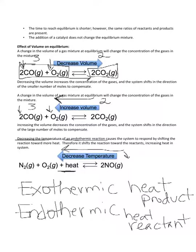What if you had an exothermic reaction? In that case, the heat would be on the right-hand side. So if you decrease the temperature, you're going to head towards more heat. In an exothermic reaction, you would shift to the right and increase the products. In an endothermic reaction, if you decrease the temperature, you shift towards the reactants. Increasing and decreasing temperature — you really have to look at what kind of reaction you're dealing with, exothermic or endothermic, and where the heat is placed.